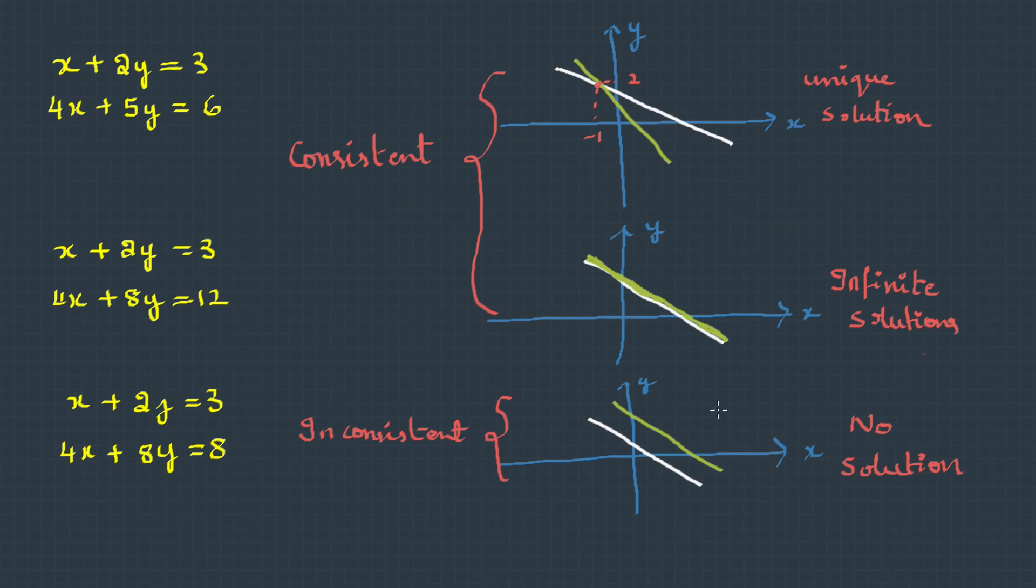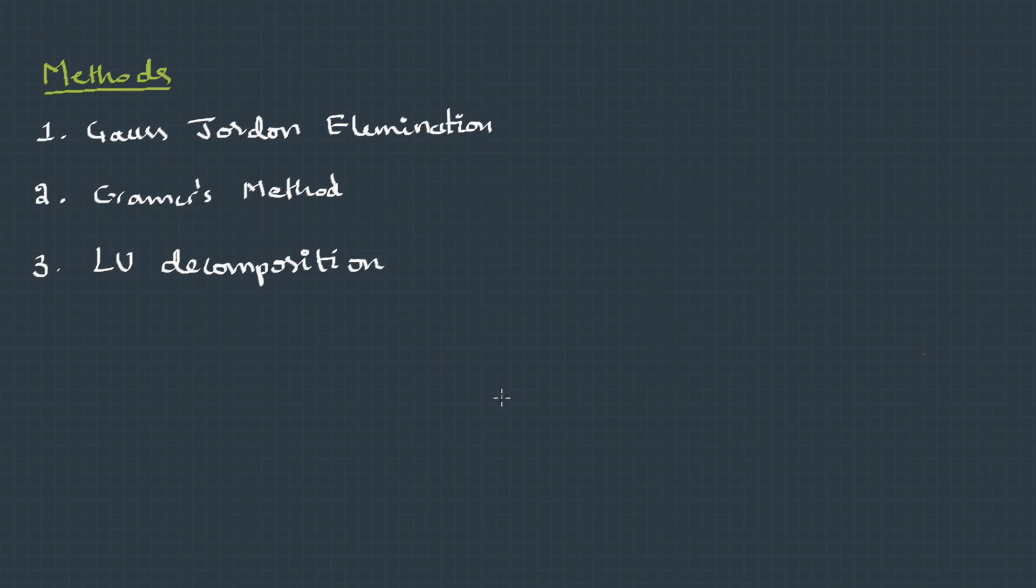To solve systems of equations, we'll learn three methods: Gauss-Jordan elimination, Cramer's method, and LU decomposition. We'll discuss all three in detail. Keep in mind, systems can be solved with any of these methods. We generally prefer Gauss-Jordan elimination because it's fast and reliable. Cramer's method works well for equations with only two variables.